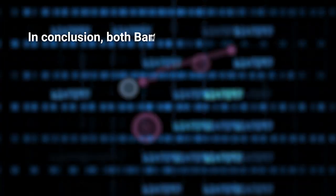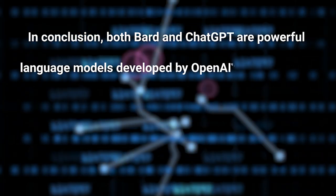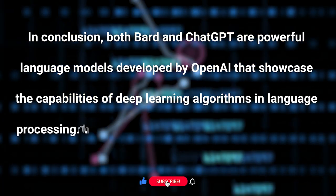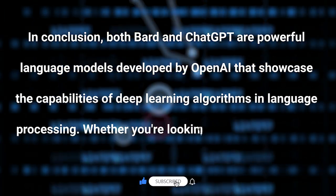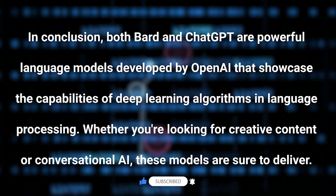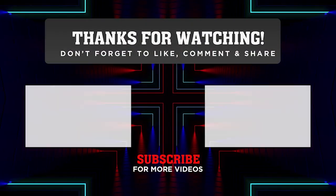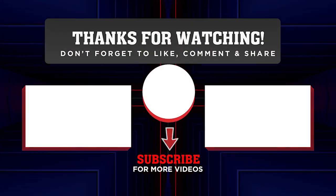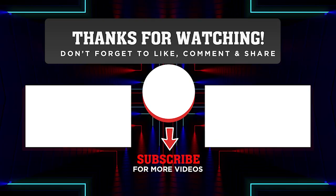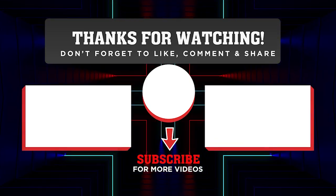In conclusion, both BARD and ChatGPT are powerful language models developed by OpenAI that showcase the capabilities of deep learning algorithms in language processing. Whether you're looking for creative content or conversational AI, these models are sure to deliver. Thank you for watching today's video. If you found this video informative, be sure to give it a like and subscribe to our channel for more. Until next time, goodbye.